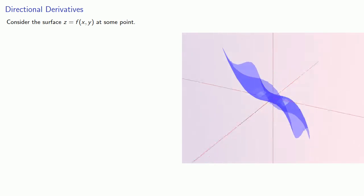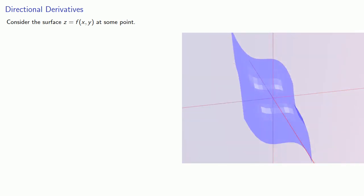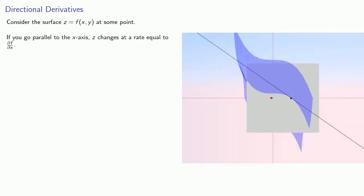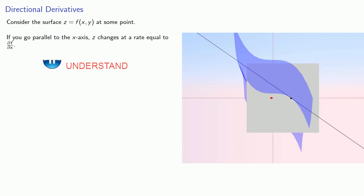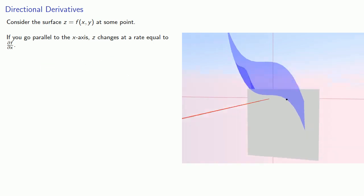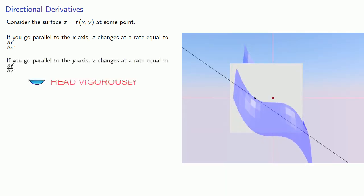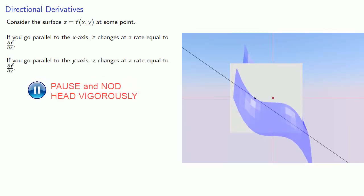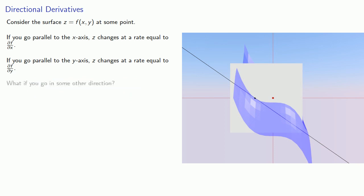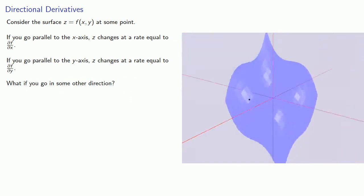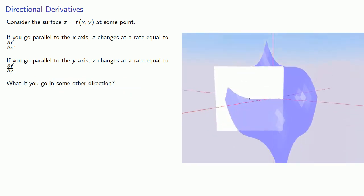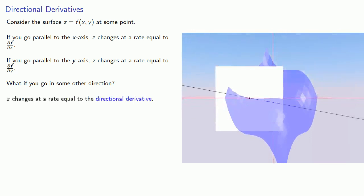Consider the surface z equals f at some point. If you go parallel to the x-axis, z changes at a rate equal to the partial of f with respect to x. If you go parallel to the y-axis, z changes at a rate equal to the partial of f with respect to y. But what if you go in some other direction? Then z changes at a rate equal to the directional derivative.